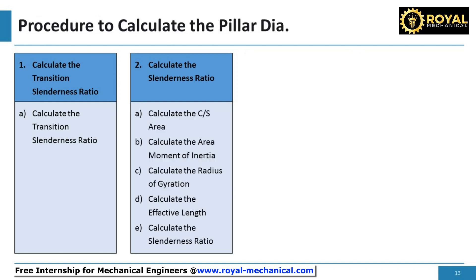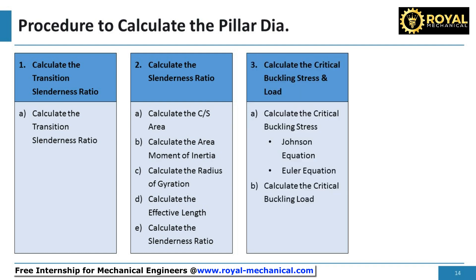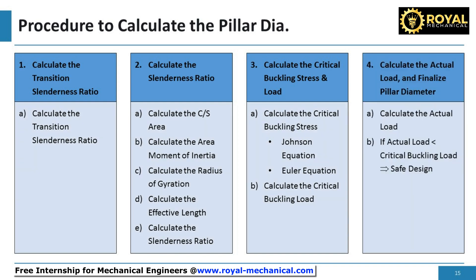In step 2 of the calculation, we will calculate the cross-section area, the area moment of inertia, the radius of gyration, the effective length, and eventually calculate the slenderness ratio. In step 3, we will calculate the critical buckling stress using the Johnson or the Euler equation, and also calculate the critical buckling load. In step 4, we will calculate the actual load, and if the actual load is less than the critical buckling load, then the design is safe.